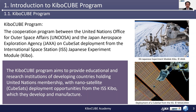This picture above is the Kibo module attached to the ISS. And the picture below is showing the moment of CubeSat deployment from the tip of the robotic arm of the Kibo module. The KiboCube program aims to provide educational and research institutions of developing countries holding United Nations membership with nanosatellite or CubeSat deployment opportunities from the ISS Kibo, which they developed and manufactured.